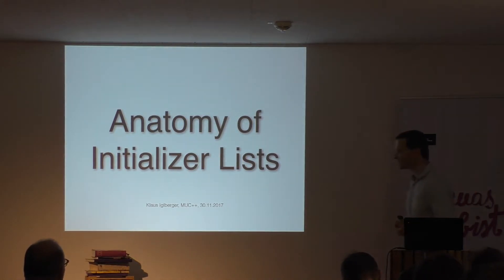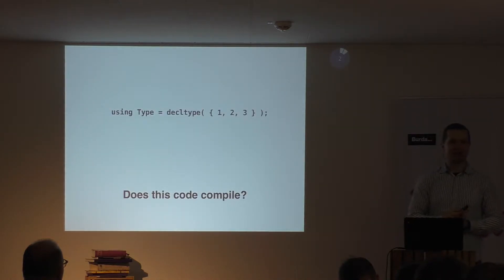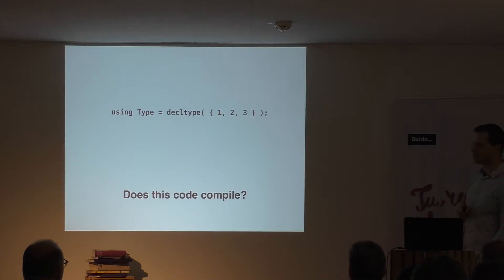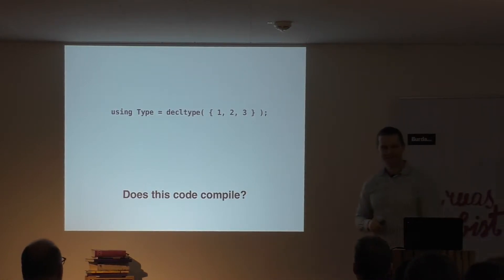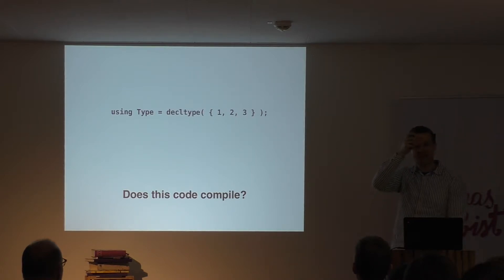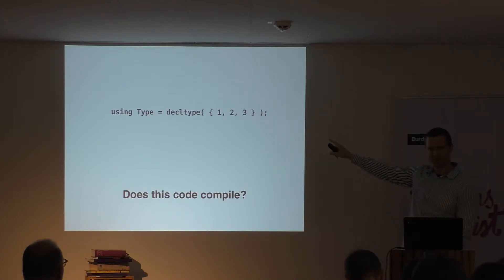So today we are talking about initializer lists. Let's start with a question: does this little piece of code compile? Unfortunately it doesn't. This is one of the few places where decltype actually doesn't give you a type, which means this initializer list doesn't have a type. That's strange.